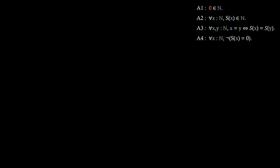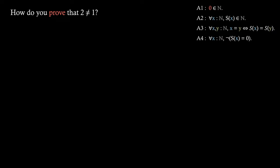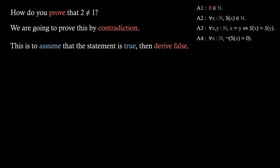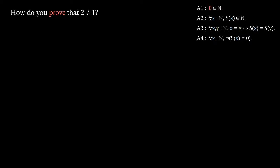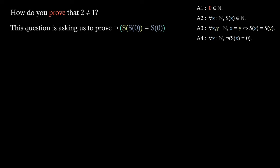Let's go back to that question from the beginning: how do we actually prove that two doesn't equal one? You might think this is quite trivial and just true, but we need to show this using these axioms. To do this, we're going to use a proof method called contradiction. This involves assuming the statement is true and then actually showing that it's false. So we need to rewrite it into something we recognise for these axioms — specifically, that it is not the case that the successor of the successor of zero equals the successor of zero. That's just a fancy way to say that it's not the case that two equals one.